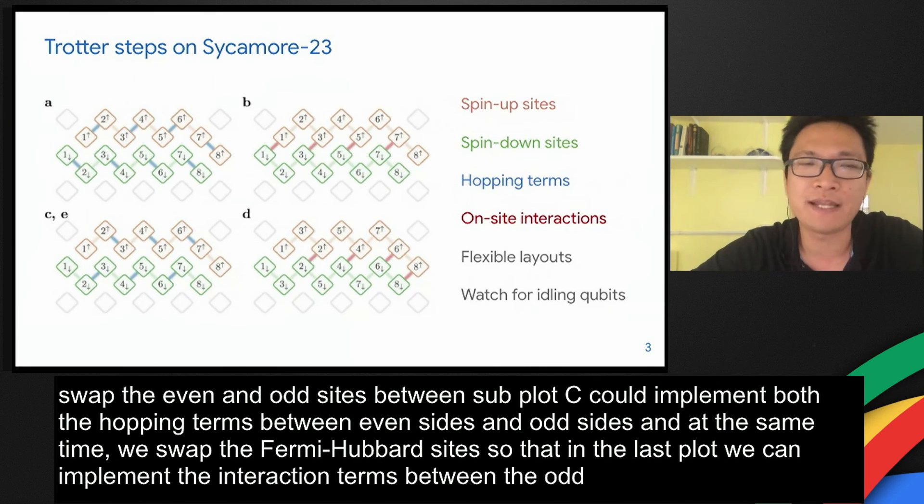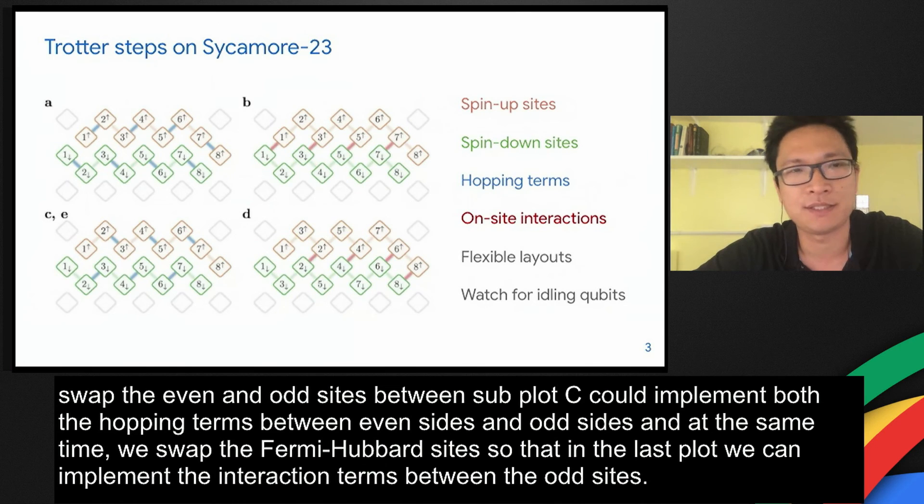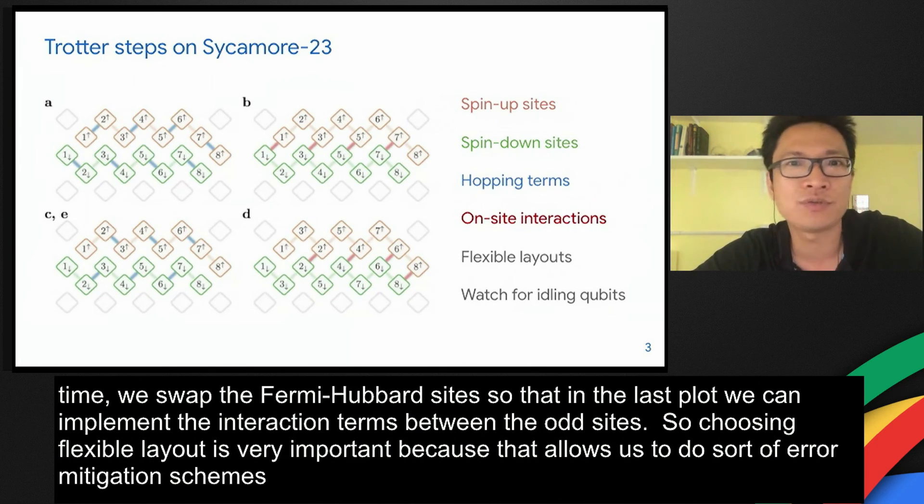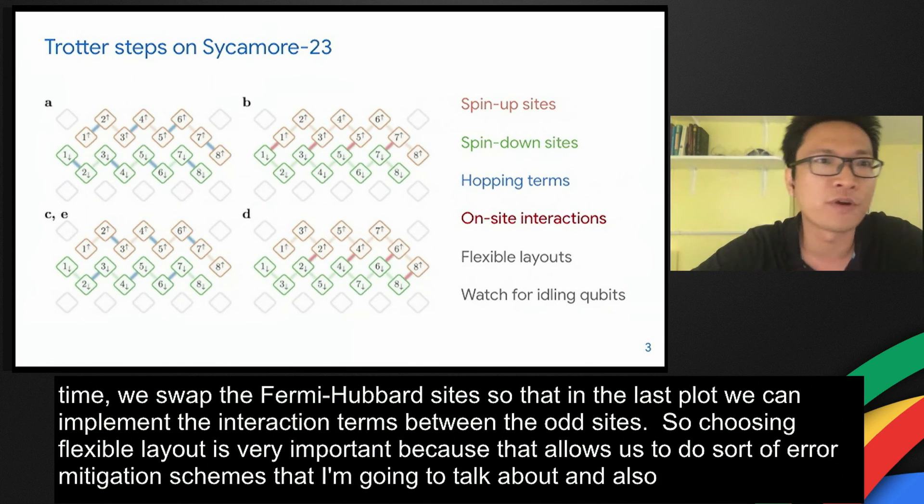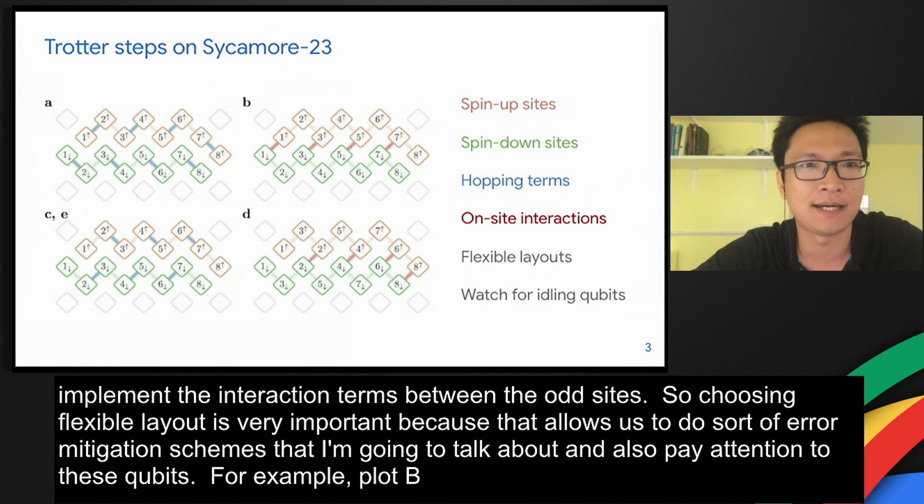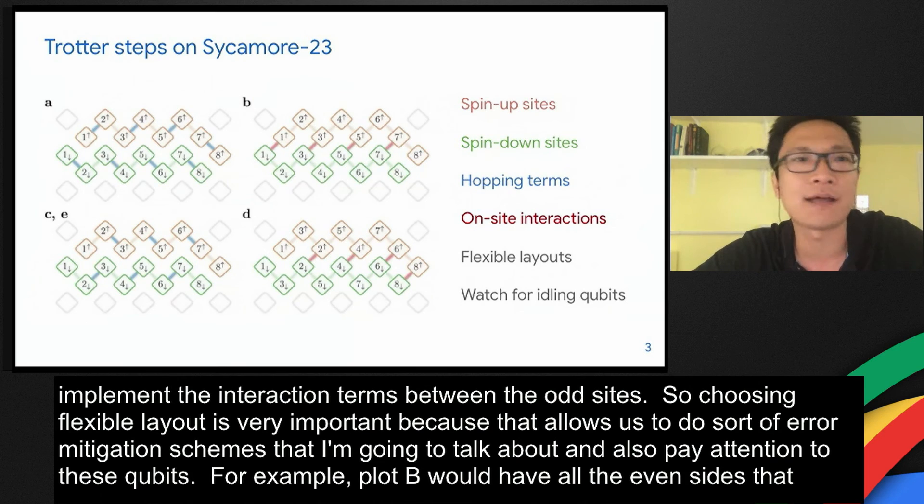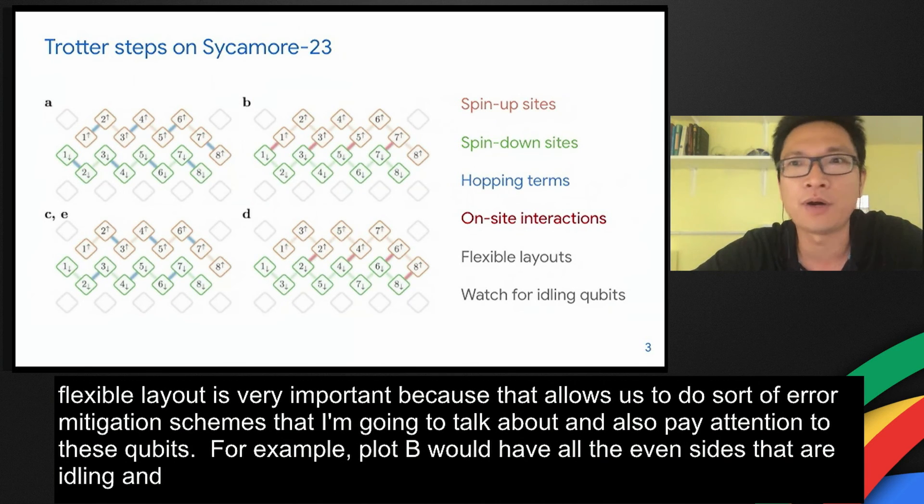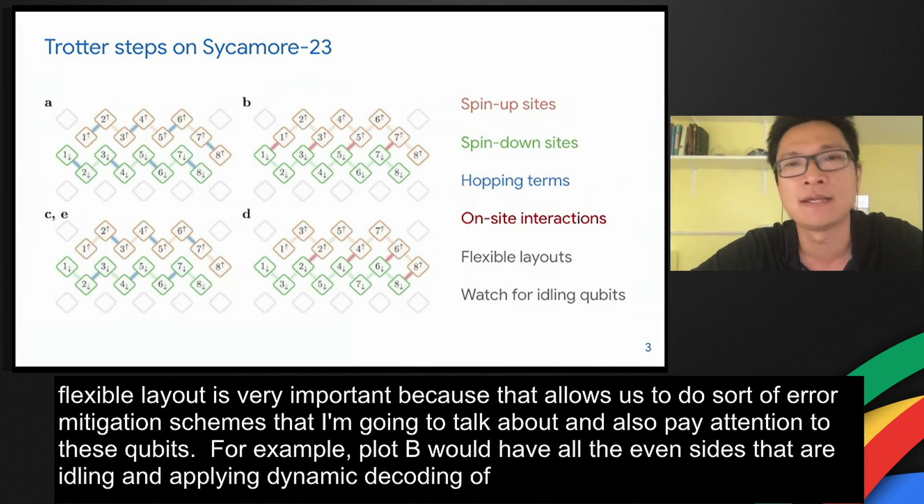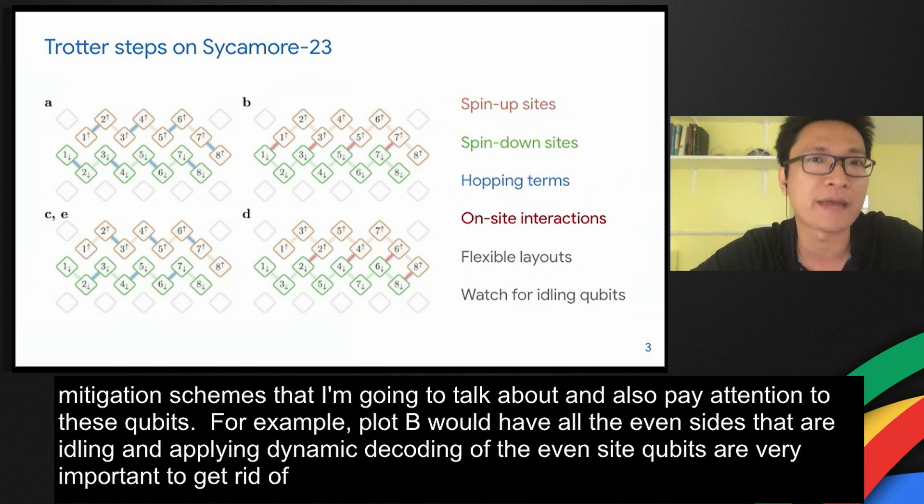Choosing a flexible layout is very important because that allows us to do certain error mitigation schemes that I'm going to talk about. Also, we need to pay attention to these idling qubits. For example, in subplot B, we have all the even sites that are idling and applying dynamic decoupling of these even site qubits are very important to get rid of crosstalks and also mitigate T2 errors.